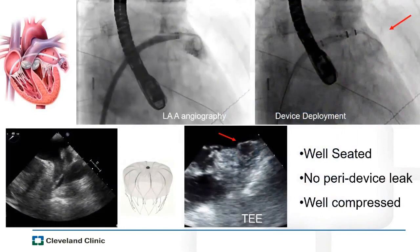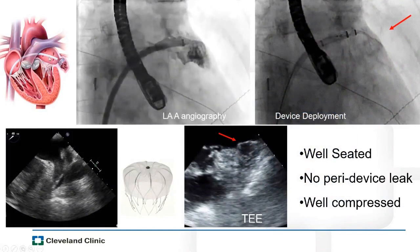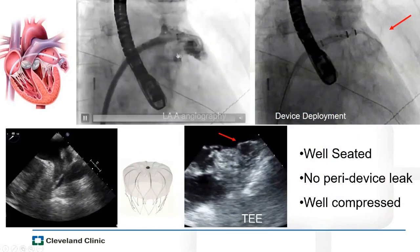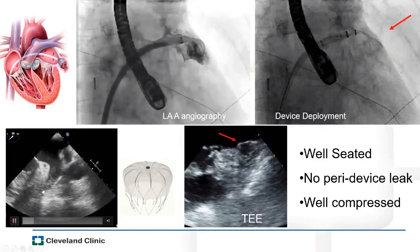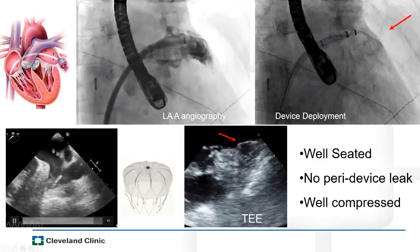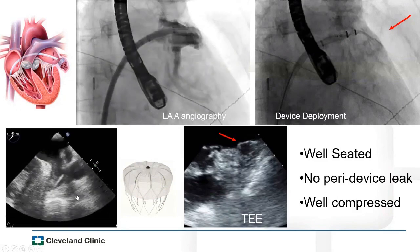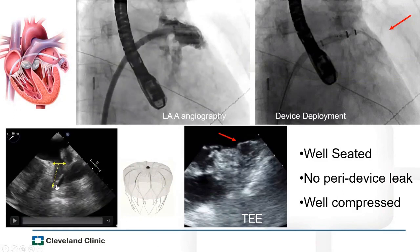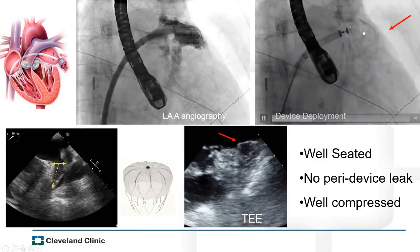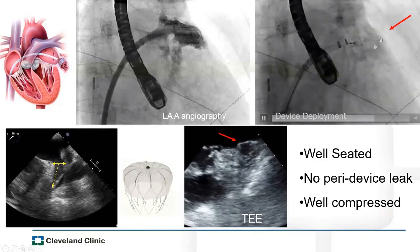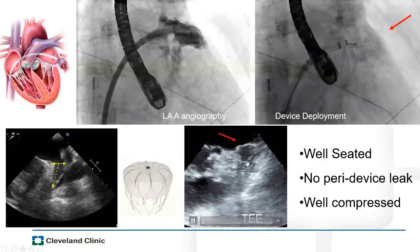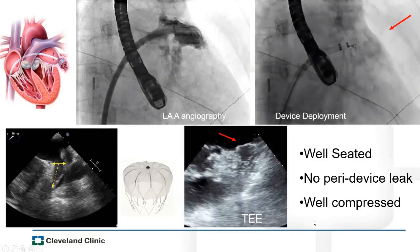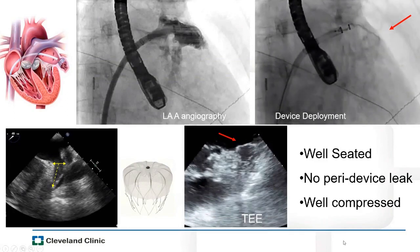The procedure is fairly simple — a percutaneous procedure via femoral stick. We go transeptal to access the left atrium, take an appendageogram (a dye shot of the appendage) to understand its anatomy, and use TEE to assess the LAA status. We take baseline measurements — the ostium and depth — to size the appendage, then deploy the device. We verify by TEE that the device is well seated, no leaks, and well compressed. If satisfied, we release it. The procedure takes no more than half an hour once access is achieved.